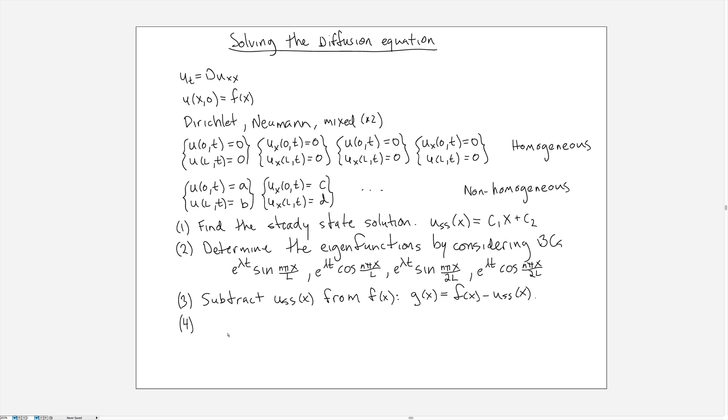the fourth step is to write G of X as a Fourier series in terms of those eigenfunctions. And so then we can find the Fourier coefficients for G of X with these particular eigenfunctions as determined by the boundary conditions.